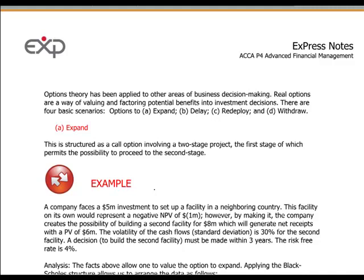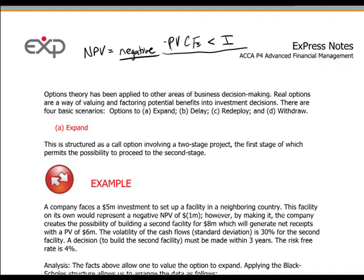However, think of this. We look at a project, for example, and the project has a net present value which may be negative. The reason for the negative net present value is that the present value of the cash flows that we have modeled are less than the investment amount, by definition. Where does Black-Scholes come into the story? Well, what we're saying is, under what circumstances — on a probability basis, normal distribution basis — could the present value of the cash flows in the future, in fact, be greater than the investment amount?